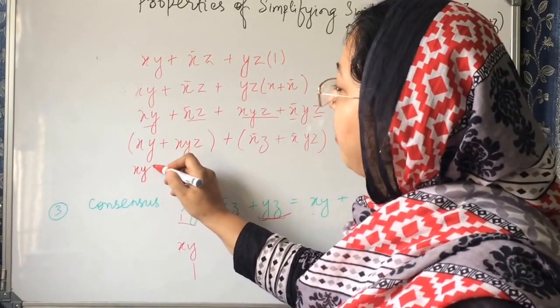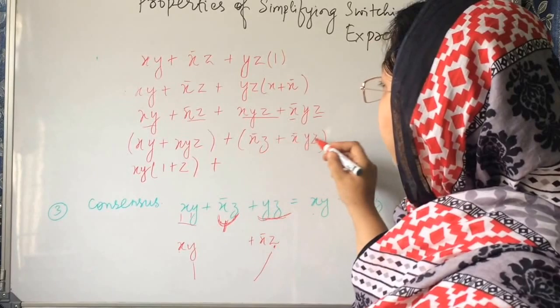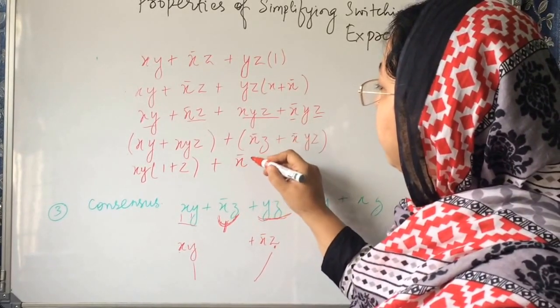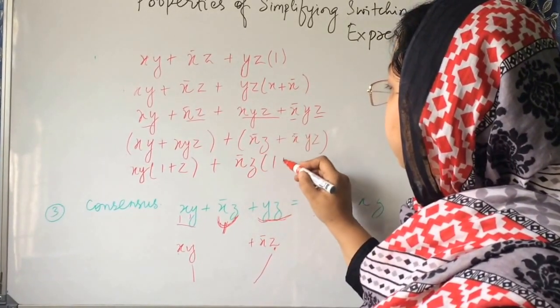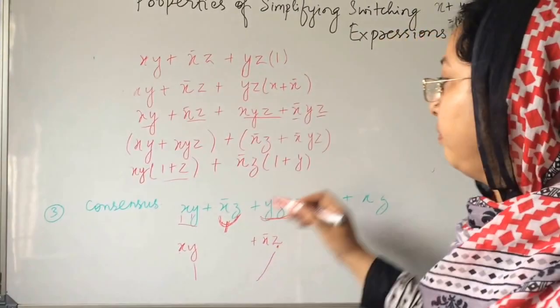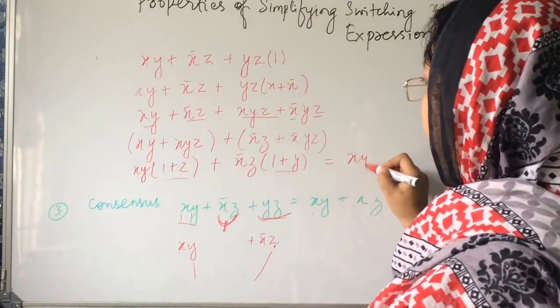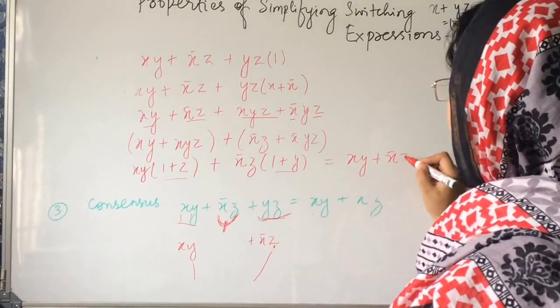And now, I am taking xy common here, 1 plus z. And here, I can take x bar z common, 1 plus y. And 1 plus z will become 1, 1 plus y will become 1. So it will become xy plus x bar z.